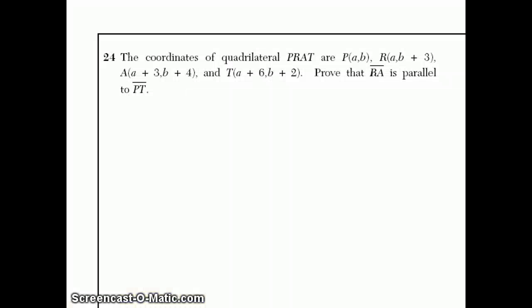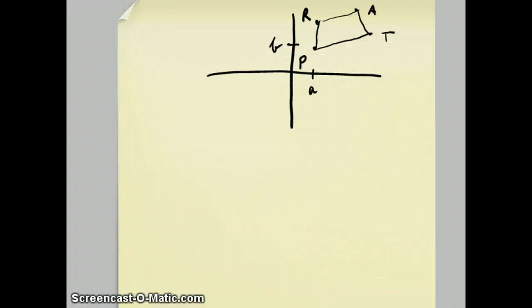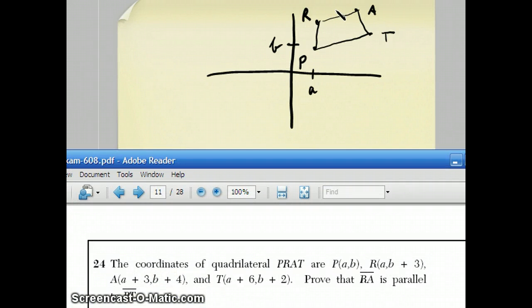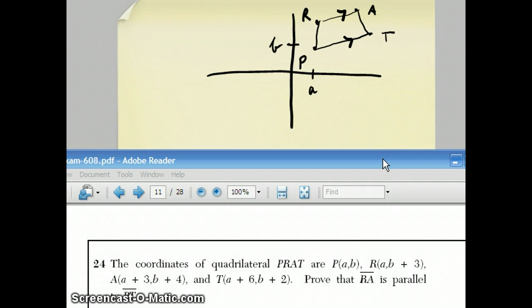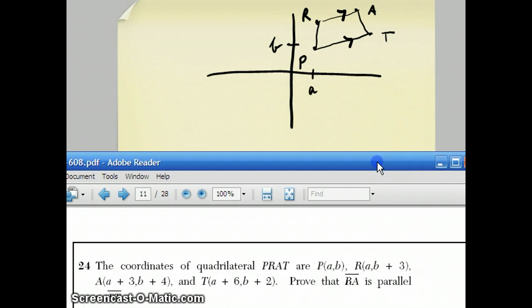Moving on to question 24, they have the coordinates of a quadrilateral. P is A comma B, R is A comma B plus 3, A is A plus 3 and B plus 4, and T is A plus 6 and B plus 2. They want you to prove that RA is parallel to PT. Well, RA will be parallel to PT if their slopes are equal. So, I'm going to work out the slope of RA and the slope of PT and see if they come out to the same thing.